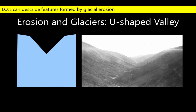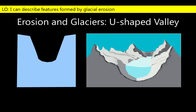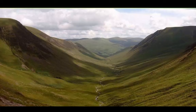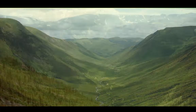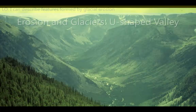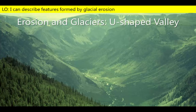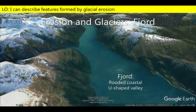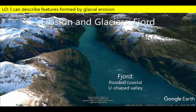The combination of plucking and abrasion deepens and widens V-shaped stream valleys to produce a U-shaped profile characterized by a flat valley bottom and steep sides, much like this example from Scotland and this U-shaped valley from the Beartooth Mountains in Montana. If rising sea levels were to flood one of these, we would have to call it a fjord.